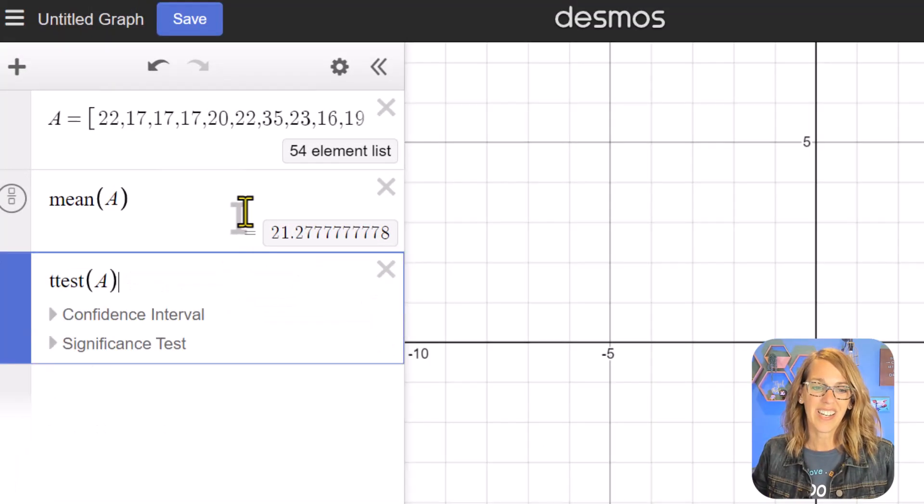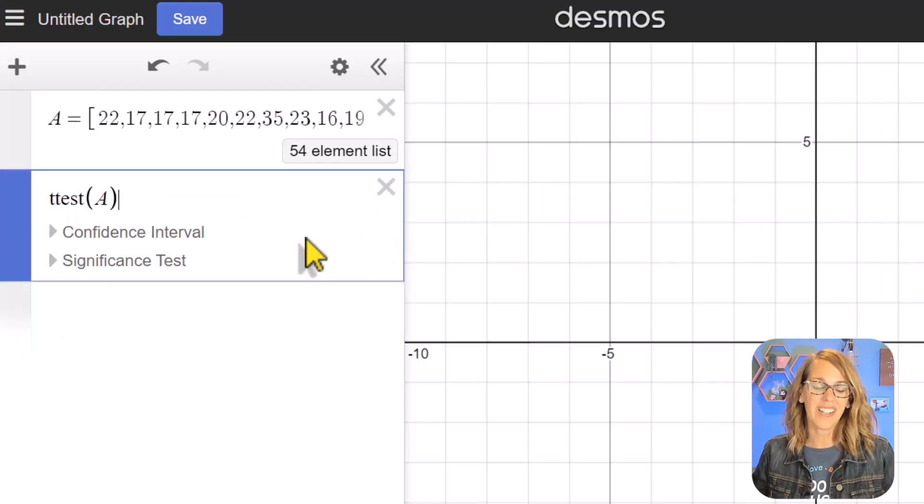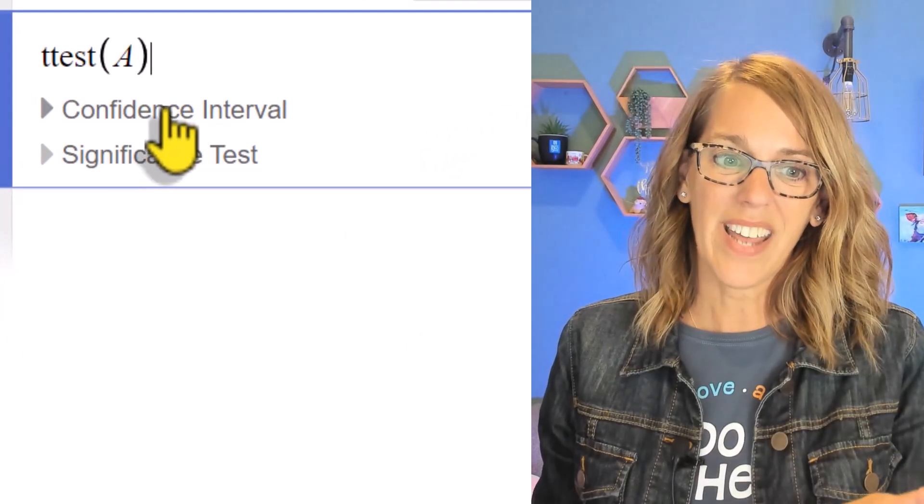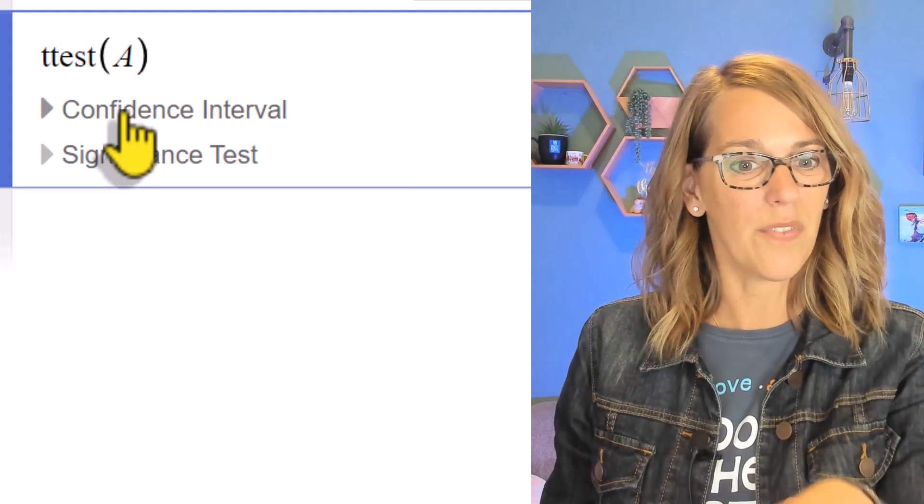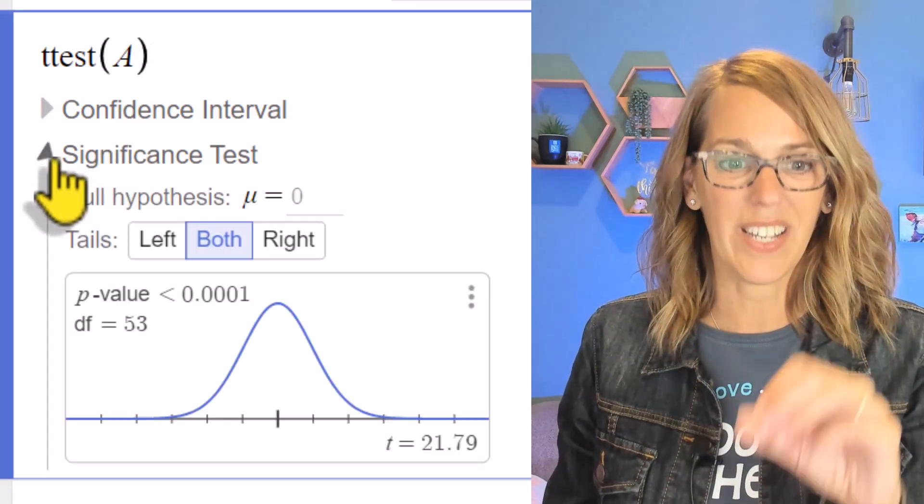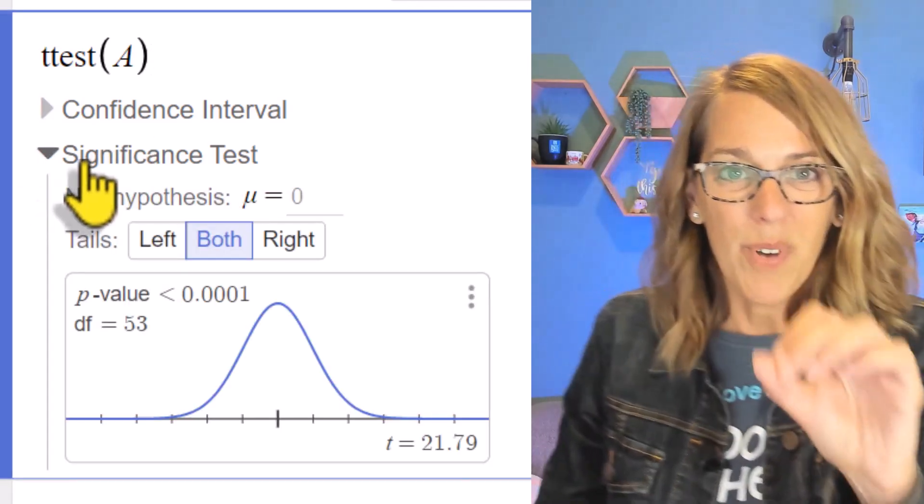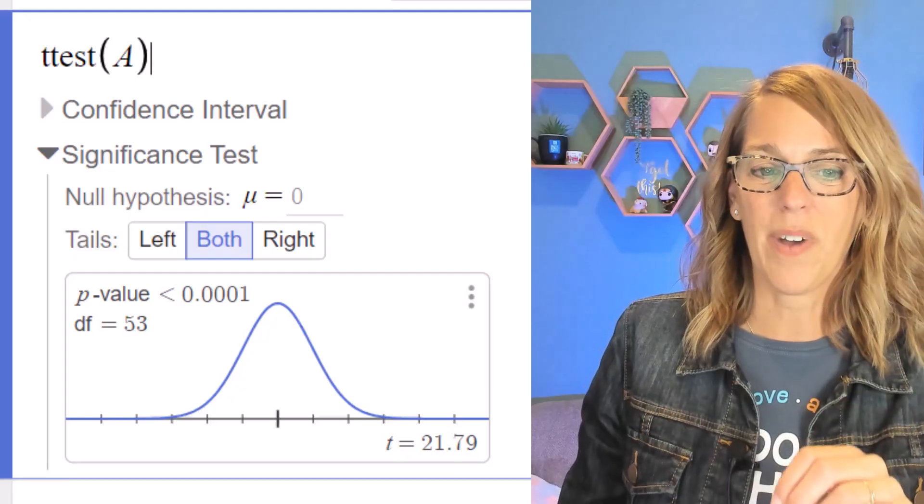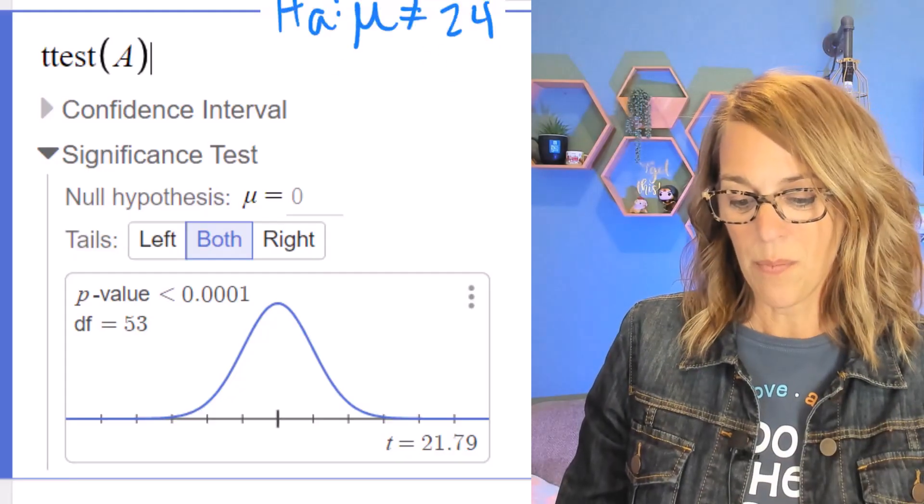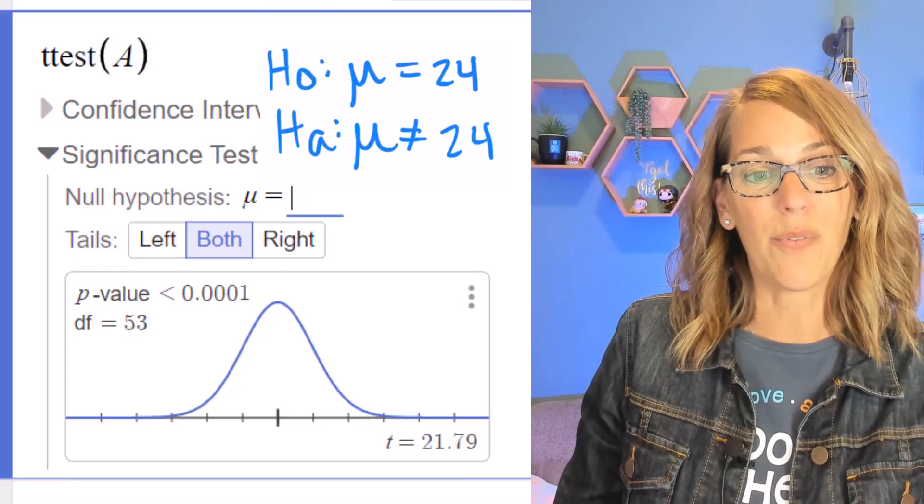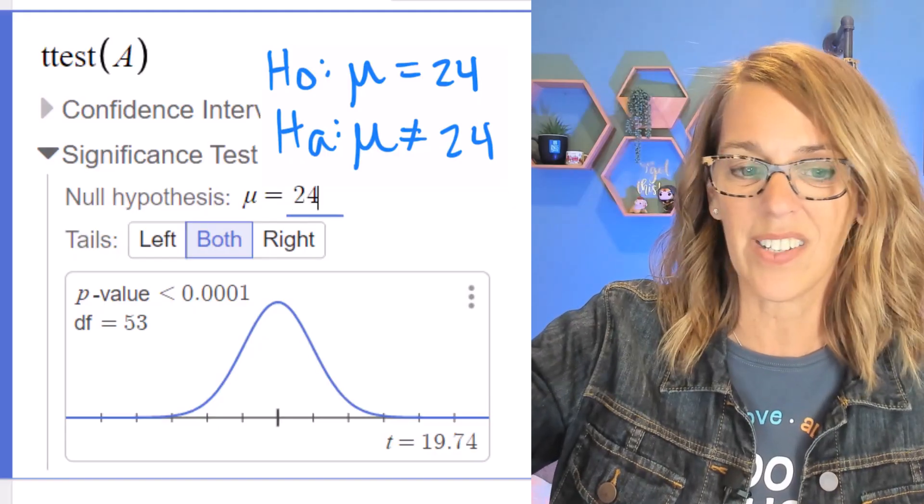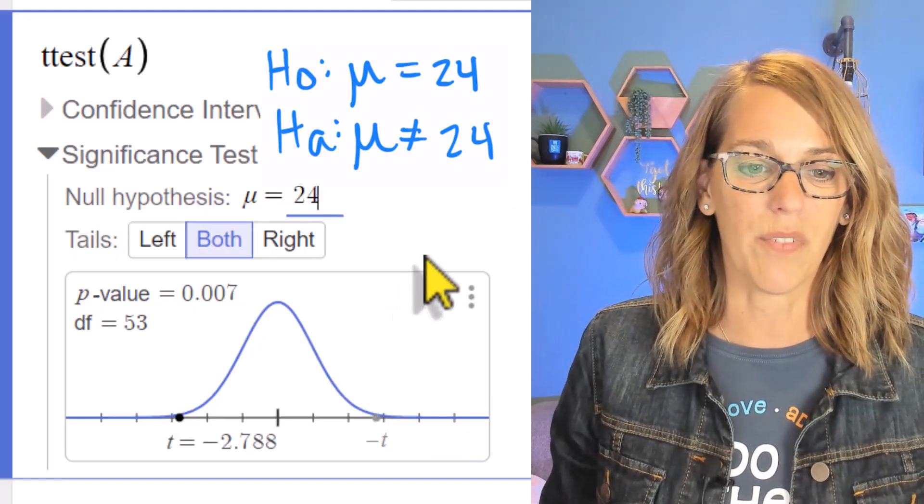Since my data is here and we named it A, just need to hit A and then click create test. We do not need the standard deviation and the mean. Let's get rid of those so I've got some more room. So I've got my t-test. I don't want the confidence interval for this example. I want the significance test. I'm almost there. It says our null hypothesis is mu equals zero, but our null hypothesis was mu equals 24. So I'm going to change that by clicking on the zero and then changing that to a 24.